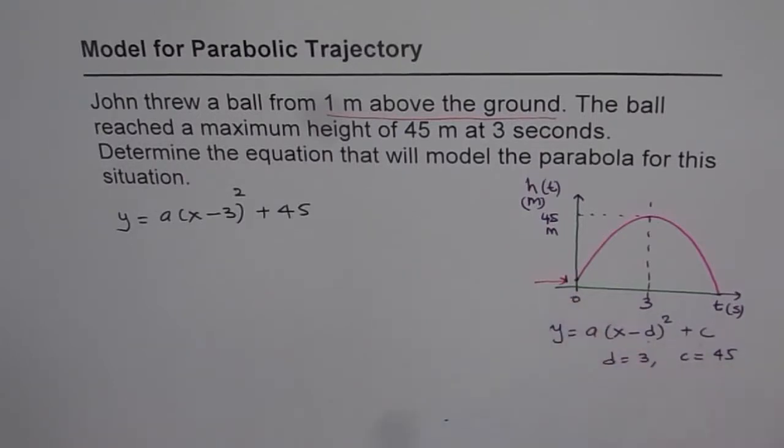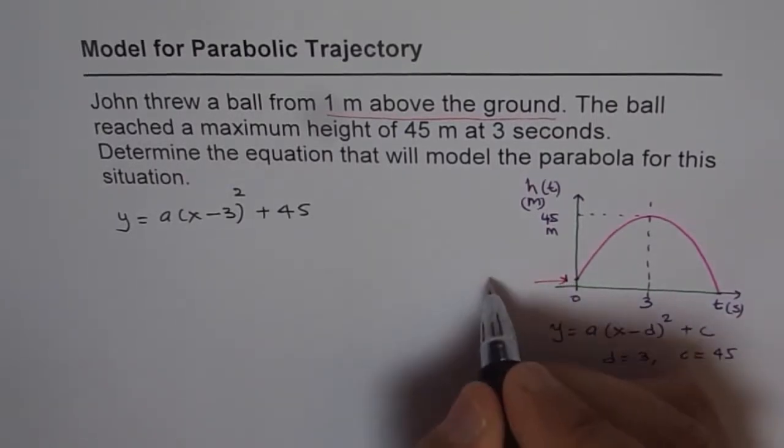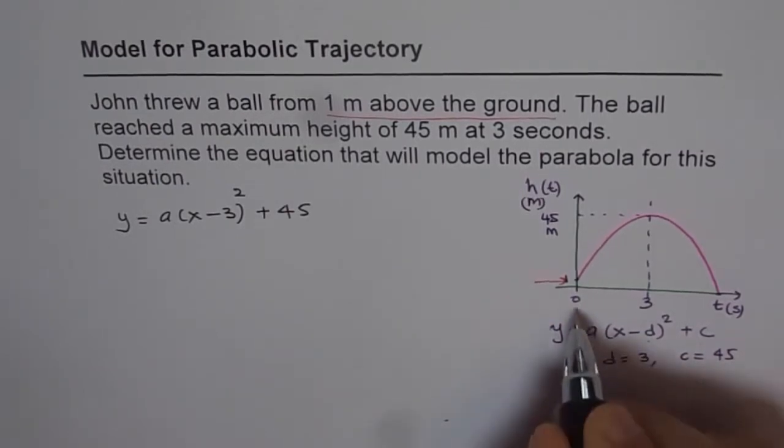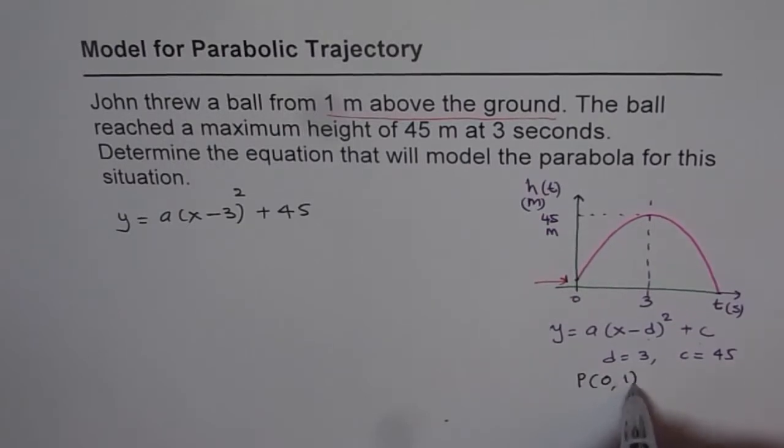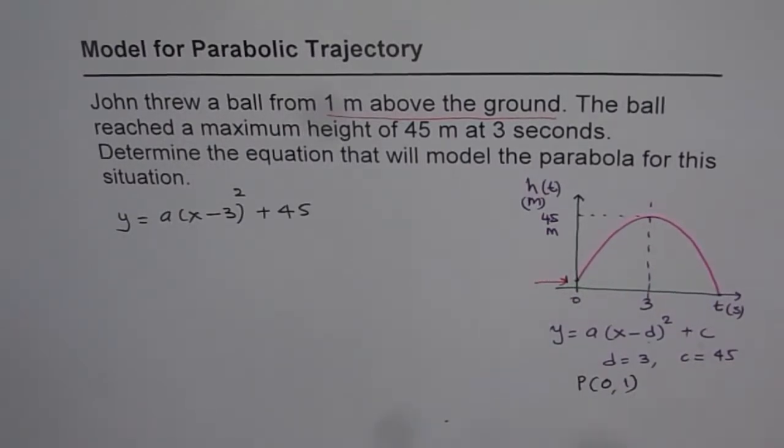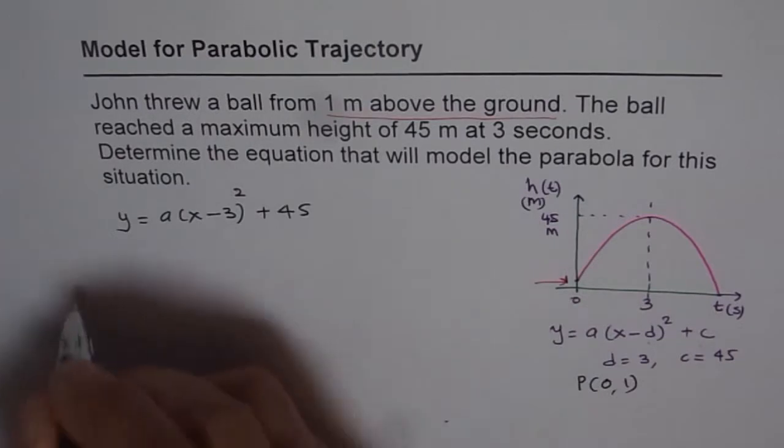It means at the instance when time was zero the height is one. So we will use this point to find the value of a. So this is actually a point which is at t equals 0 our height is one, right? So that is the point.